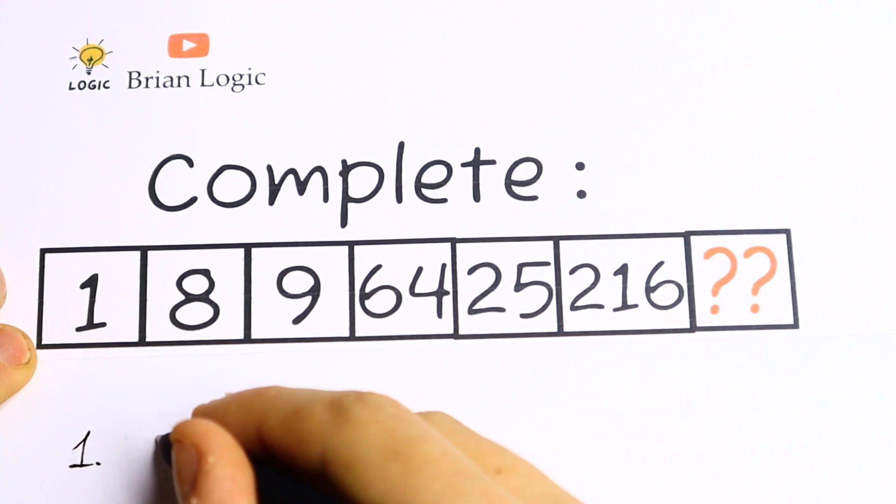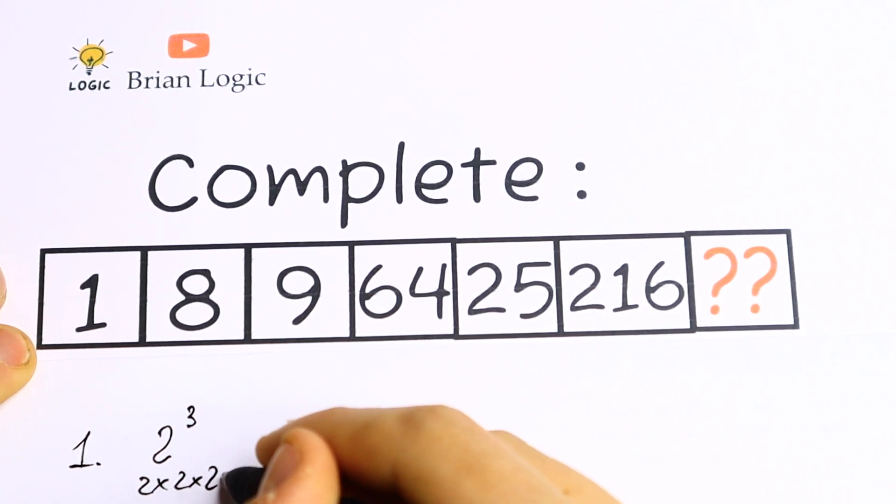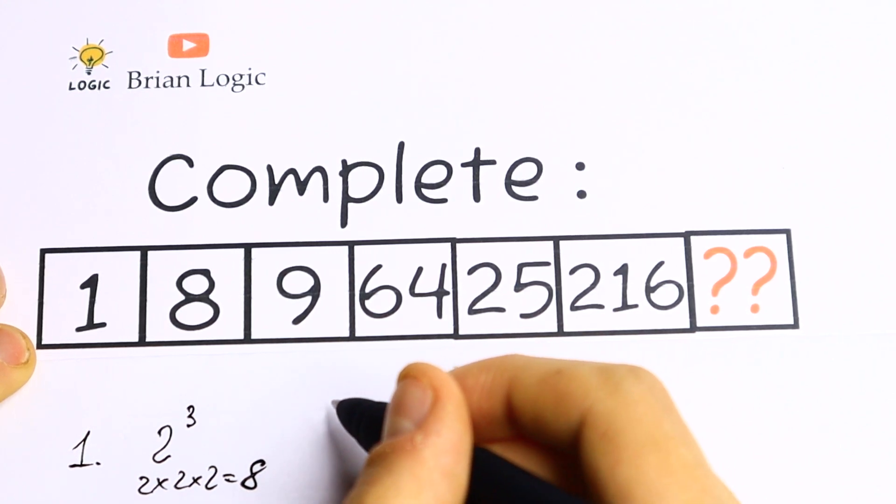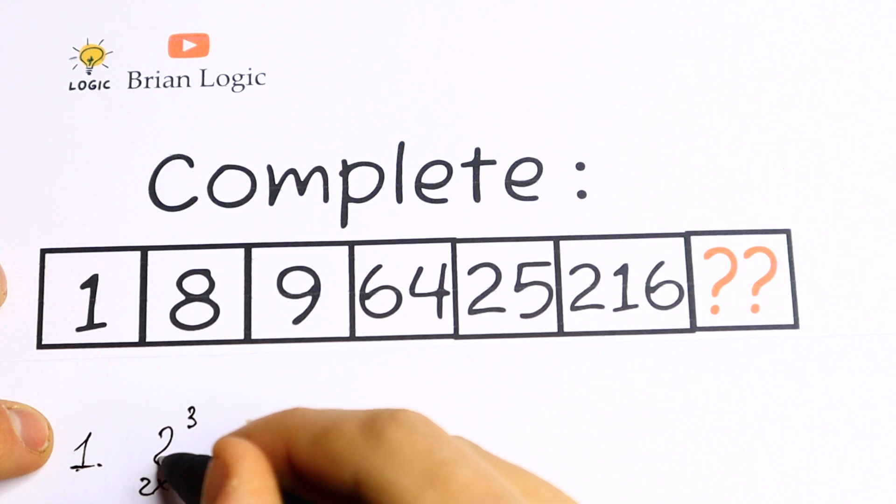Let's write this 8 as 2 cubed. We can do this because 2 times 2 times 2 will be equal to 8. Right now we have an order. In the beginning we have 1, right here we have 2.